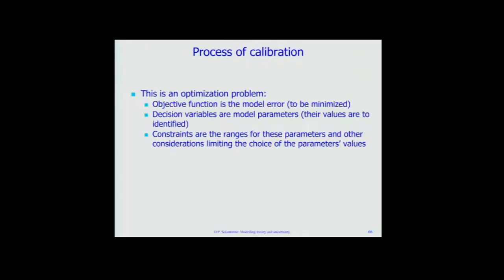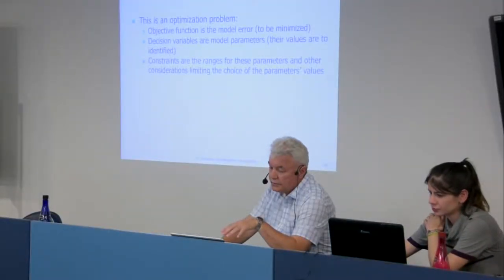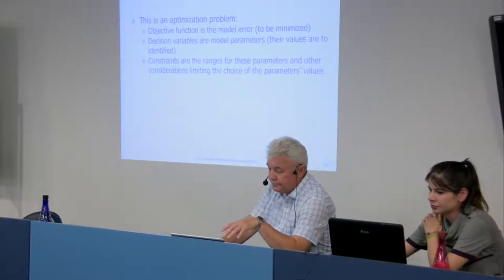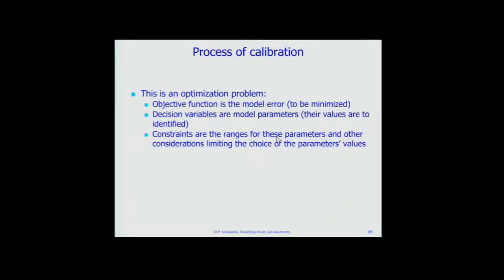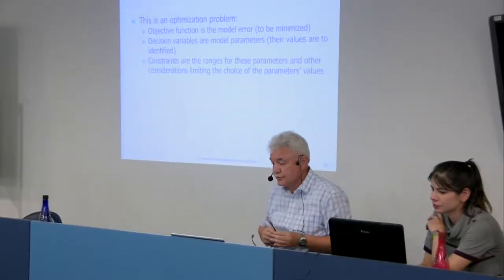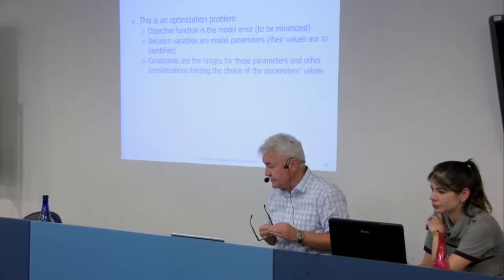This is an optimization problem. The objective function is the model error — for example root mean squared error (to minimize) or Nash-Sutcliffe efficiency (to maximize). The decision variables are the model parameters we need to identify. Constraints include parameter ranges, which encode physical knowledge about what range each parameter should occupy. For example, in our model certain elevation parameters have ordering constraints such as d1 cannot exceed d2.